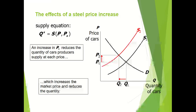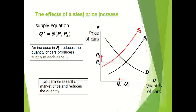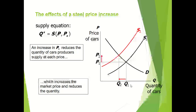The market is now at equilibrium where the new supply curve S2 intersects the demand curve. This increases the market price from P1 to P2 and reduces the quantity from Q1 to Q2. So because of the increase in price of steel, an increase in price of steel reduces the quantity of cars producers supply at each price, which increases the market price and reduces the quantity.